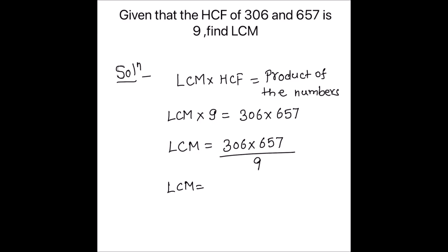So there is a common factor of 9 in between the two numbers 306 and 9. 9 times 1 is 9, 9 times 3 is 27, 3 is remainder, this becomes 36, 9 times 4 is 36. So LCM will be 34 times 657.